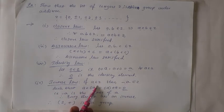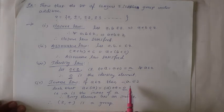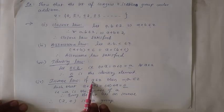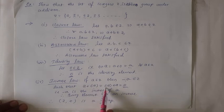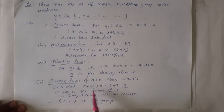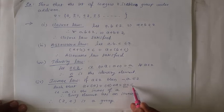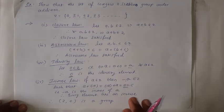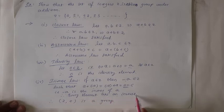Then the Inverse law: if a belongs to Z then −a belongs to Z, because in the set of integers we have both positive and negative numbers. So if a belongs to Z then −a belongs to Z, such that a + (−a) is equal to (−a) + a is equal to 0. Because adding a negative number and its positive counterpart gives 0, and this 0 is the identity element of Z. Therefore, −a is the inverse of a, implying every element has an inverse.